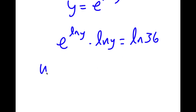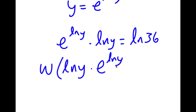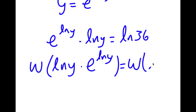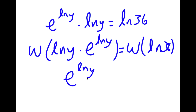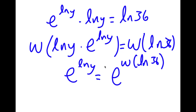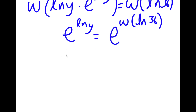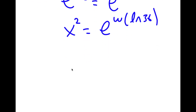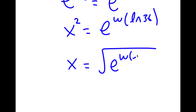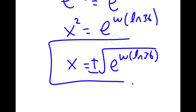Now I'm going to apply the Lambert W function on both sides. So I have W of ln y times e to the power of ln y equals W of ln 36. This results in y equaling e to the power of W of ln 36. And remember we let y equal x², so x² equals e to the power of W of ln 36. Taking the square root on both sides, x equals plus or minus the square root of e to the power of W of ln 36.